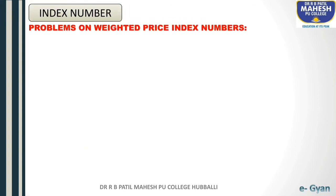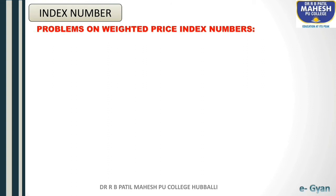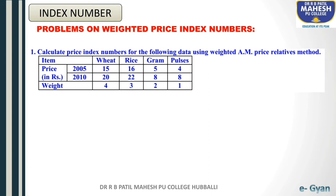Let us solve problems on weighted price index numbers. In the previous session, we solved examples on unweighted price index numbers. Now we are going to solve examples on weighted price index numbers. As you know, in weighted price index numbers we have two types of formulas: weighted price index numbers and weighted aggregative price index numbers. The first example: calculate price index numbers for the following data using the weighted arithmetic mean price relatives method. The items given are wheat, rice, gram, pulses, with prices for 2005 and 2010.